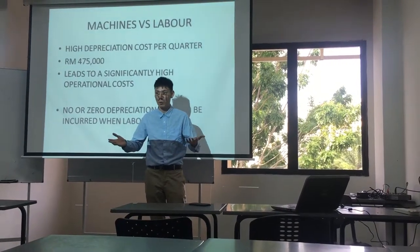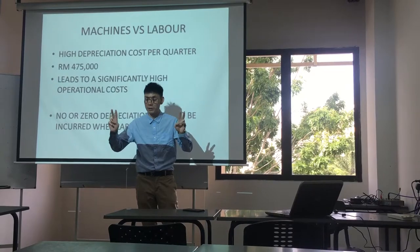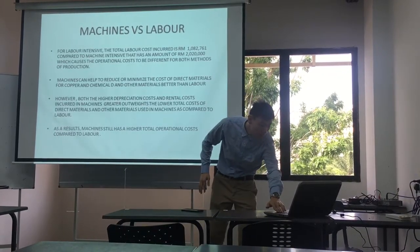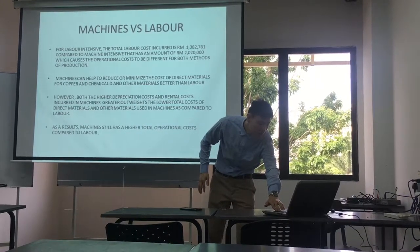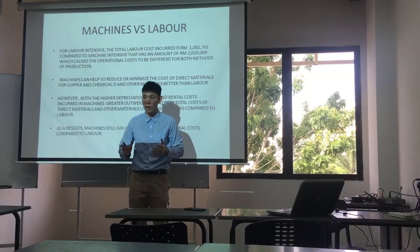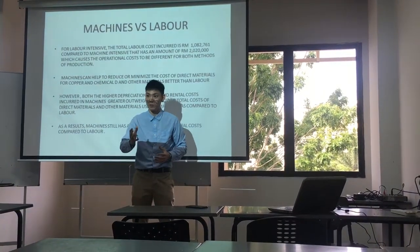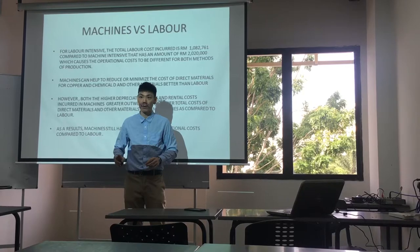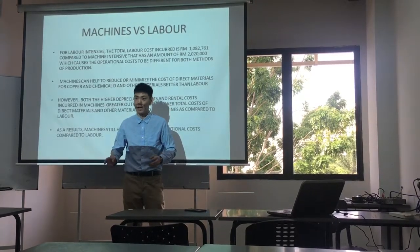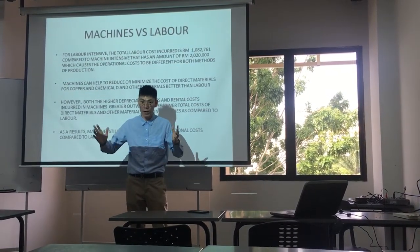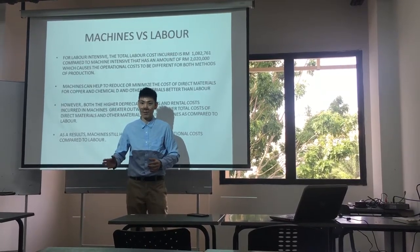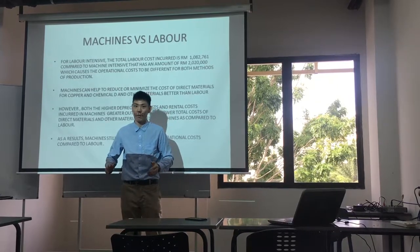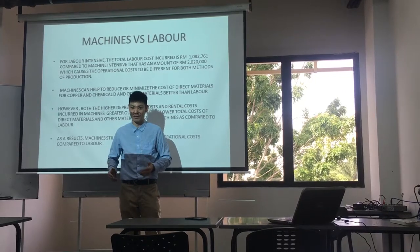When labour is used, labour does not depreciate, so that is an advantage of using labour. By using machines, we are able to reduce the cost of direct materials and other materials used. But we have to take into consideration the high depreciation cost — approximately 4,000 to 5,000 per quarter — as well as the high rental cost, which greatly outweighs the cost reductions from using machines. As a result, this tends to lower operational cost and increase net profit when labour is used instead of machines.